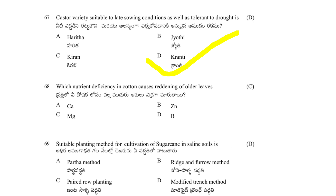Which is the suitable planting method for cultivation of sugarcane in saline soils? Options: Partha method, rasen furrow method, paired row planting, modified trench method. The correct answer is modified trench method — it is the suitable sugarcane planting method for saline soils.